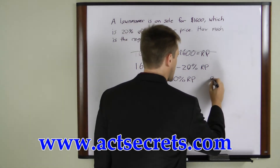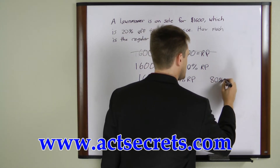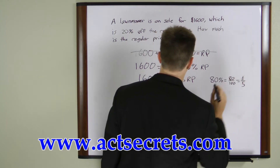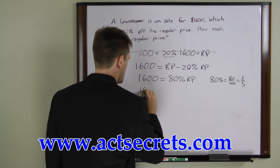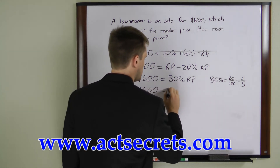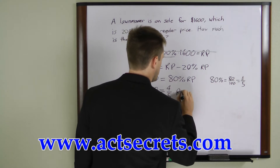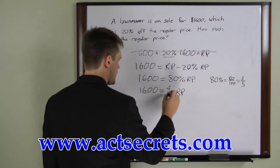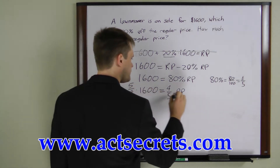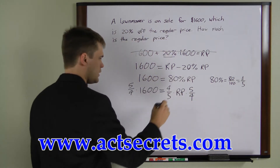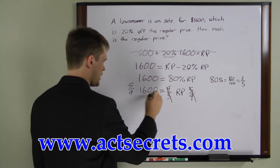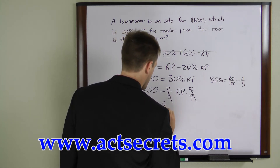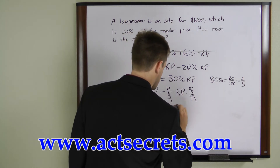Now, 80% we can rewrite as a fraction. 80% equals 80 over 100, which is the same as 4 over 5. We'll plug this back into the equation: $1,600 equals 4 over 5 times the regular price. To solve this, all we have to do is multiply both sides by 5 over 4, and these two cancel, leaving us with: the regular price equals 5 over 4 times $1,600.